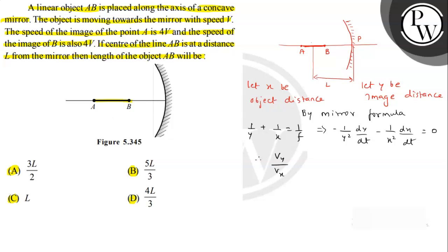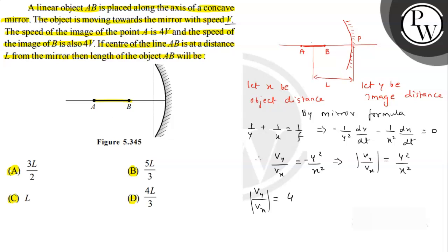Taking just the magnitude, vy upon vx equals y² by x². As per the question, the object is moving with speed V and the image is moving at 4V. So vy upon vx equals 4. Therefore, y/x equals plus or minus 2.